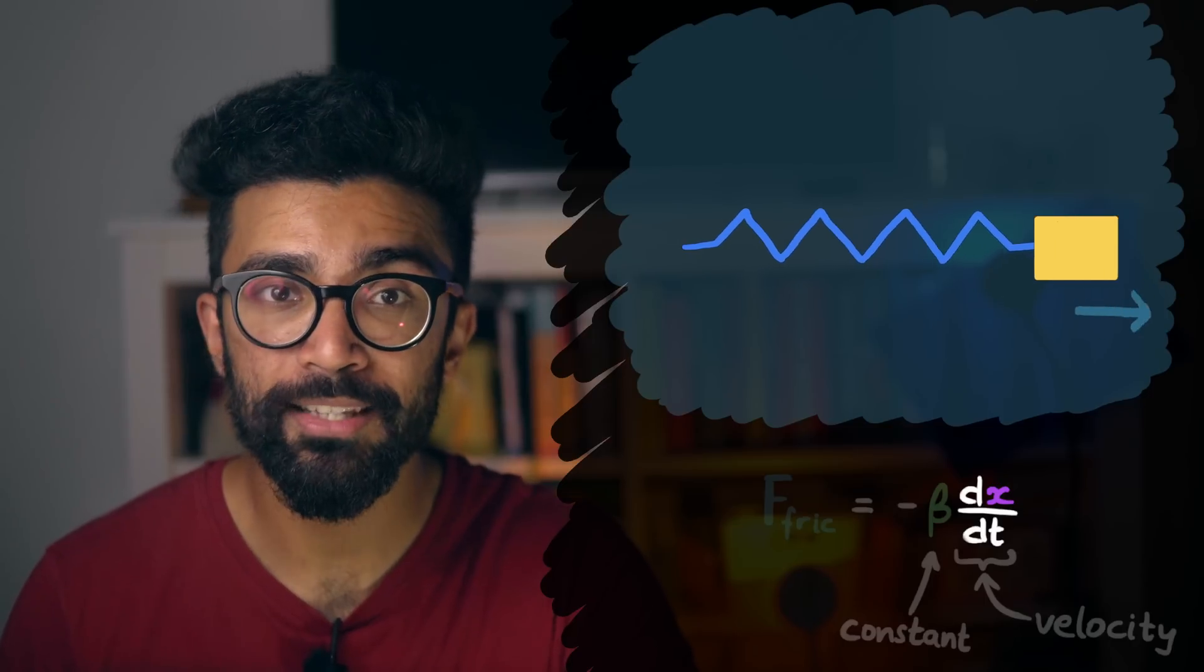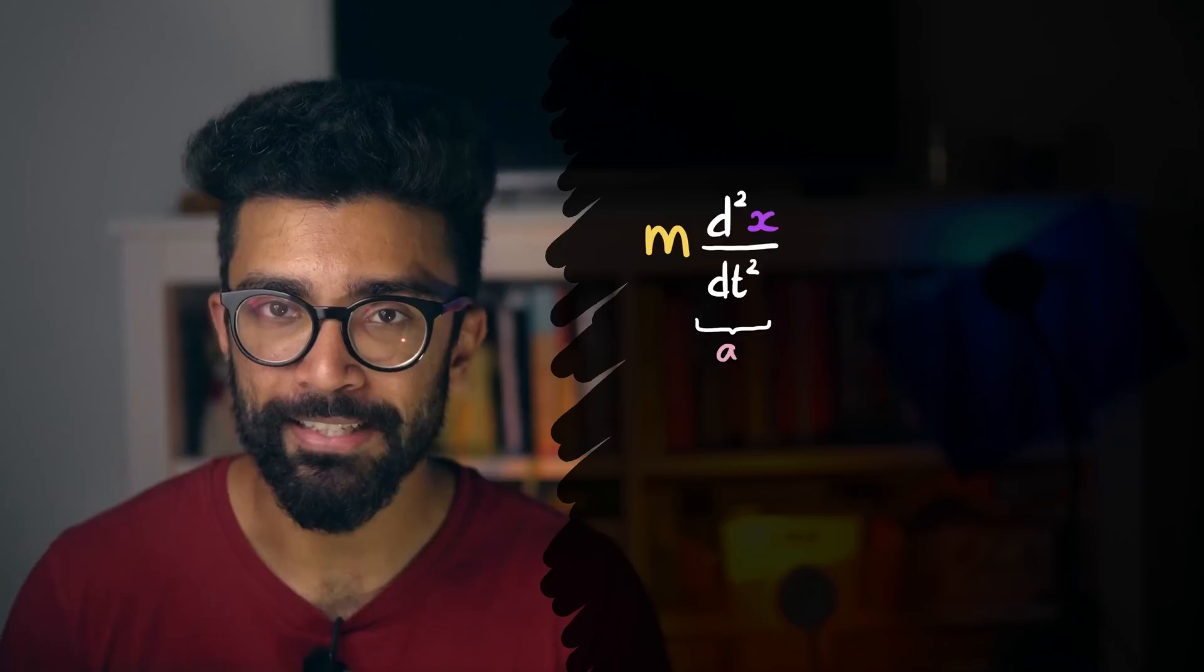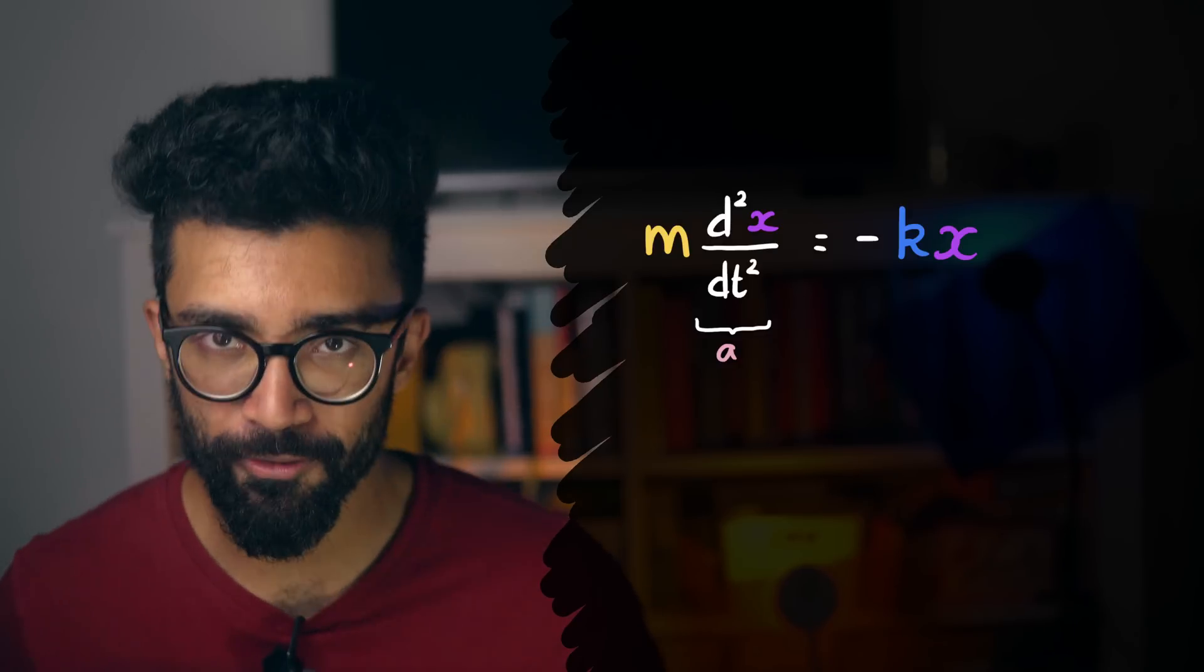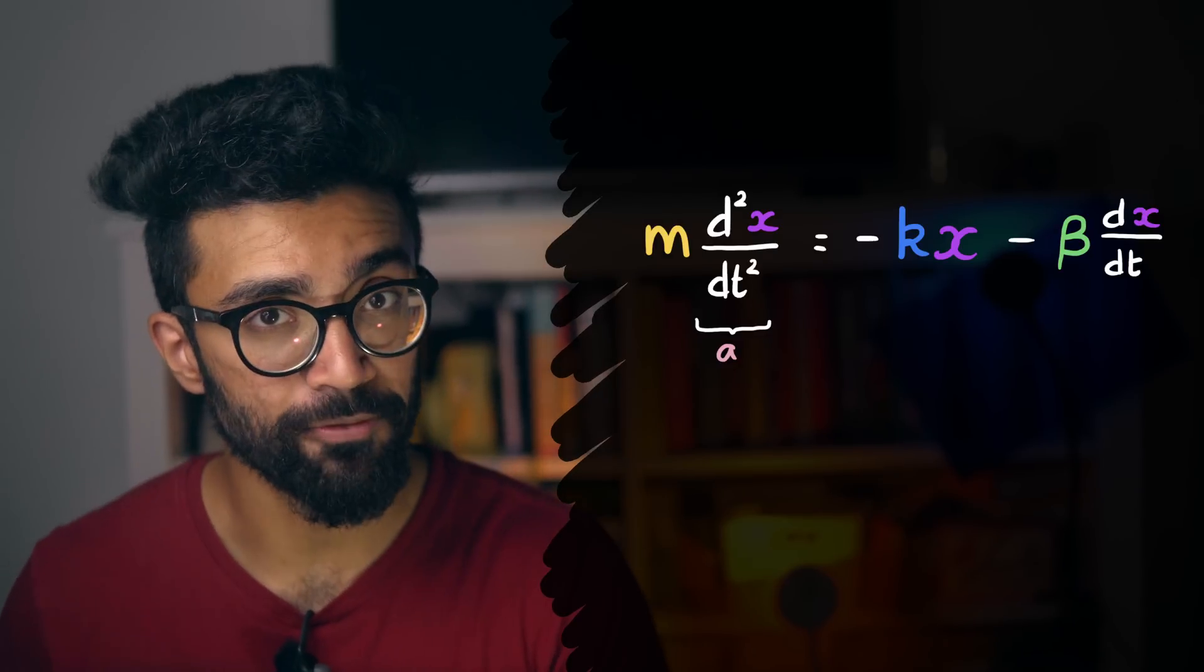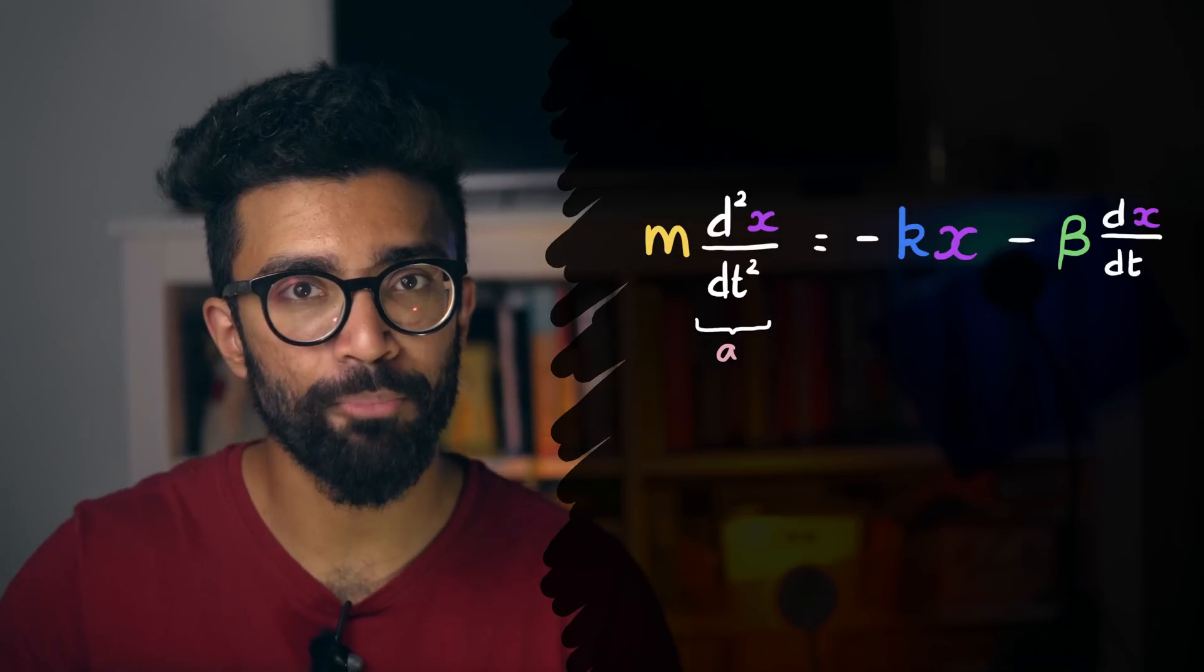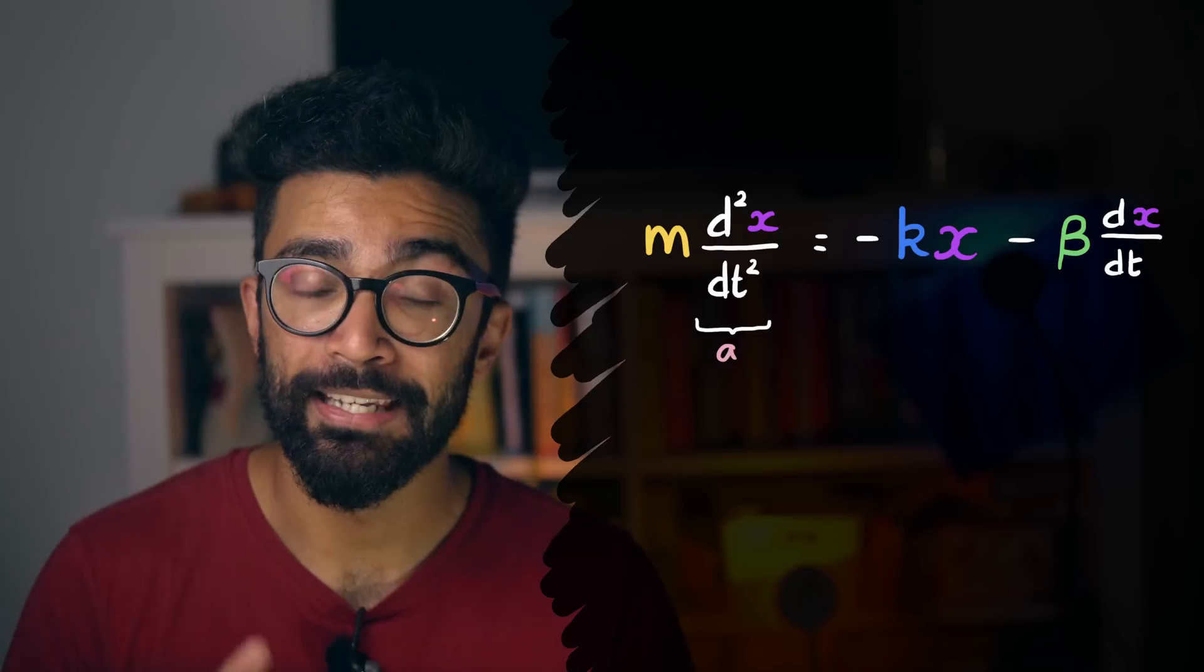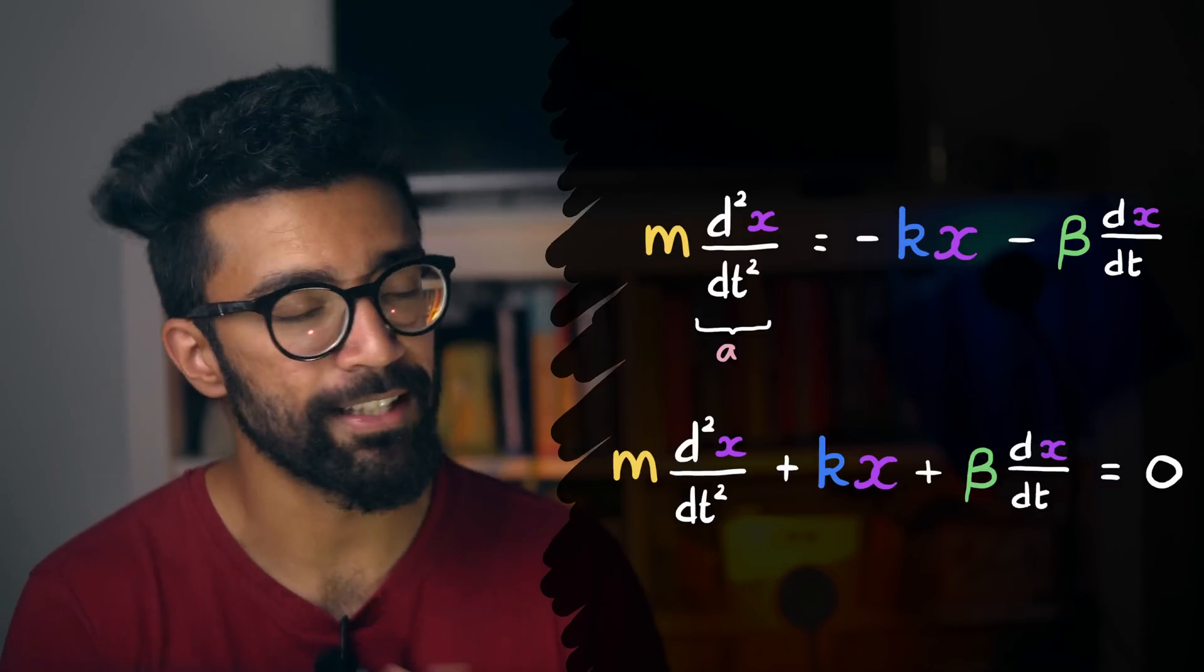So what does the equation look like now? Well, the net force on the mass, Ma, is given by the sum of the spring force and the friction force. We have to account for both this time. And both of these are negative because they both act against the direction of displacement, which is what we defined to be positive initially. And now if we rearrange, we get this equation.